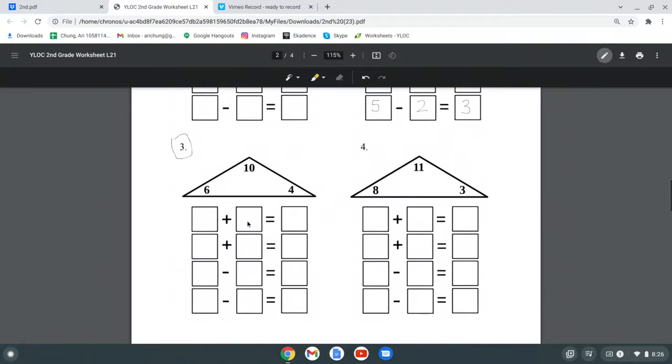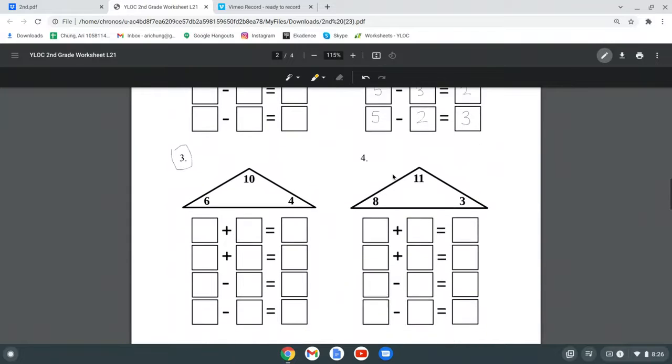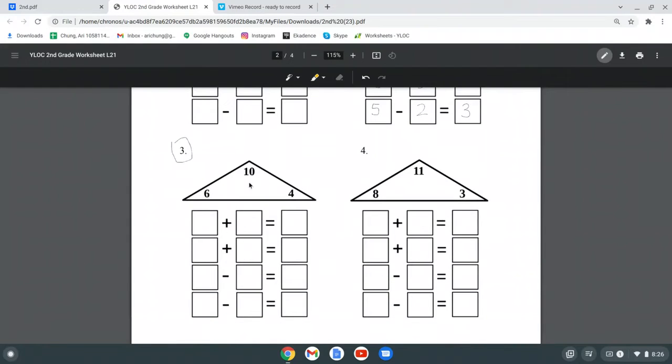Let's see number 3. Here we have 10, 6, and 4. Like what we did in 2, we know that 10 is greater than 6 and 4. So 6 plus 4 or 4 plus 6 will have to equal 10. So let's write that: 6 plus 4 equals 10. And then we can switch them. It will be 4 plus 6 equals 10.